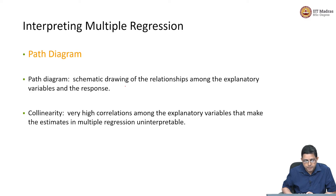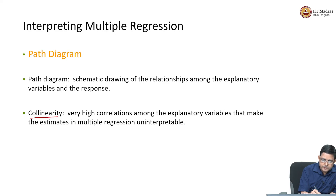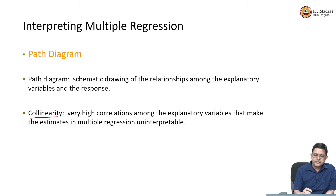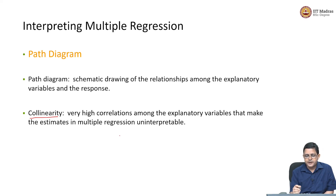If the explanatory variables are not independent, that situation is called collinearity. Collinearity represents very high correlation amongst the explanatory variables, and sometimes it can be so severe that it makes the estimates of MLR very difficult to interpret. We will see an example of that.